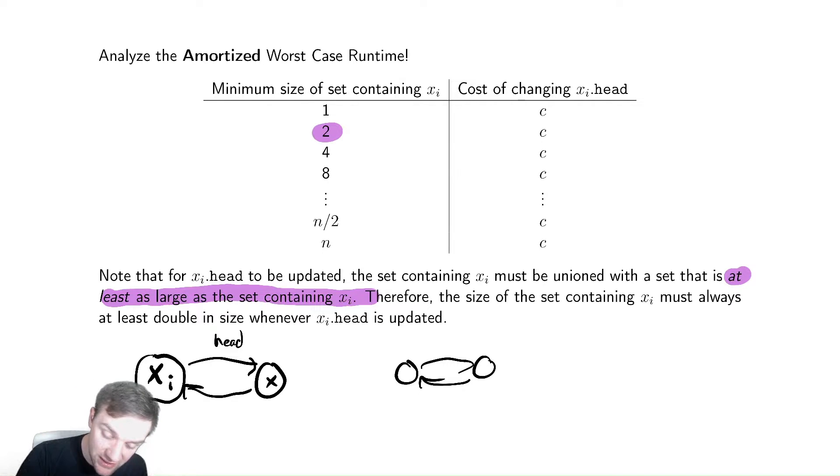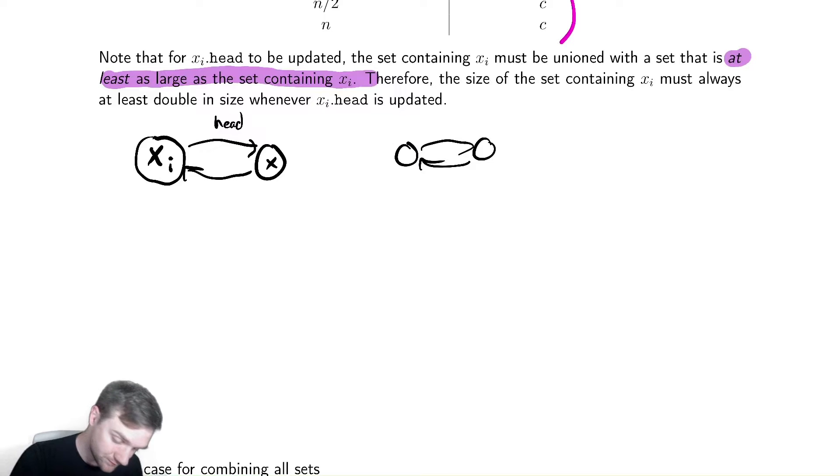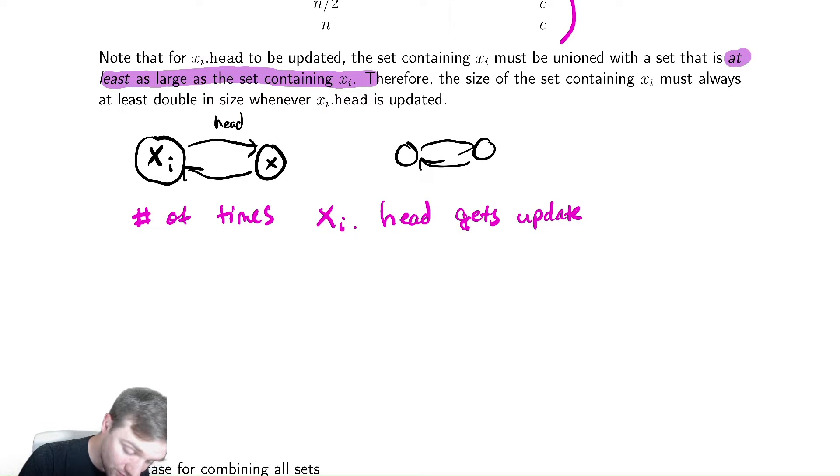How many times does this possibly occur? We're always increasing the size by two. How many times could I possibly increase the size by two if I have n things? That better be log base two of n is the most number of times that xi.head could be updated. I'm going to define that to be a variable ki, and we just said it's log base two of n.